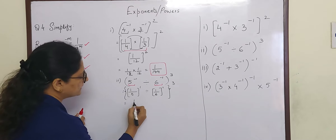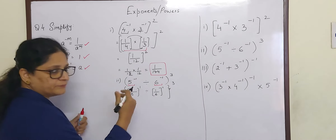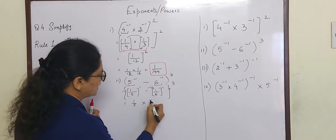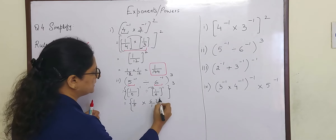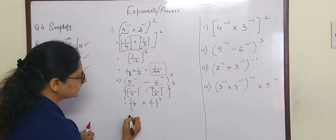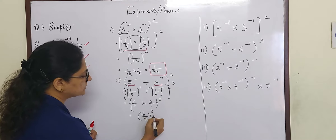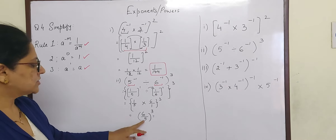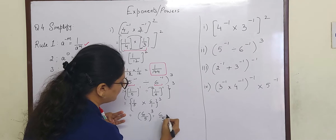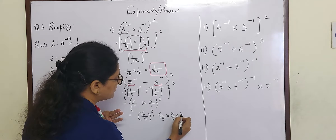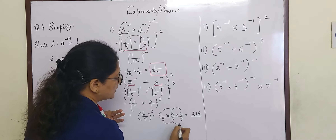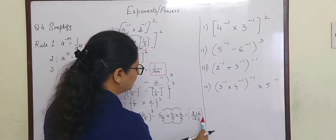Now 1 by 5 raised to 1 is nothing but 1 by 5. When division is replaced by multiplication, what happens to the second fraction? Yes, we do a reciprocal. So 1 by 6 becomes 6 by 1, raised to 3. So 1 by 5 into 6 by 1 — there is no common factor to cancel — gives us 6 by 5, the whole raised to 3. Now 6 by 5 raised to 3 means 6 by 5 has to be repeated 3 times: 6 by 5 into 6 by 5 into 6 by 5. 6 times 6 is 36, 36 times 6 is 216. 5 times 5 is 25, 25 times 5 is 125. So 216 by 125 will be your final answer.